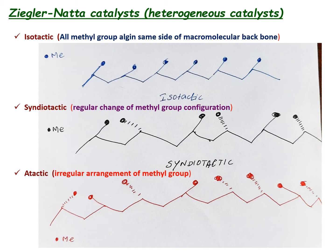The Ziegler-Natta catalyst development led to greater structural specificity. One of the most important achievements was the exclusive preparation of isotactic polypropylene — where all the methyl groups in the polypropylene are aligned in the same direction, or configured in the same direction with respect to the backbone of the macromolecule. When all methyl groups are uniformly aligned in the same direction, the polymer is called isotactic. This unique structural property and stability led to the Nobel Prize.